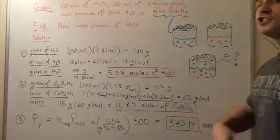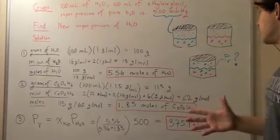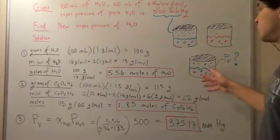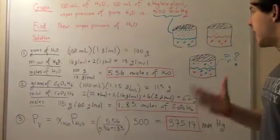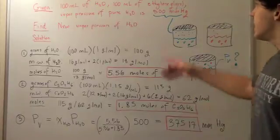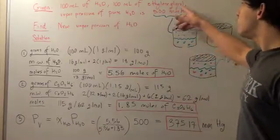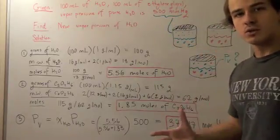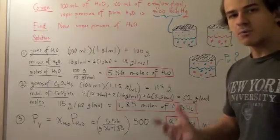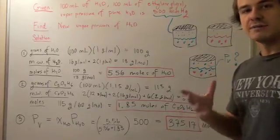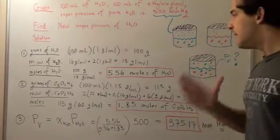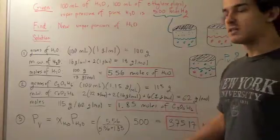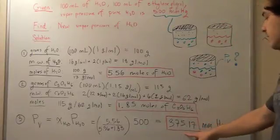Now, it should be less than 500 mmHg. That's because we have fewer water molecules on the surface, since ethylene glycol molecules now occupy part of the surface. So fewer water molecules are evaporating, which means the vapor pressure of water in the new system should be less — and it is less.